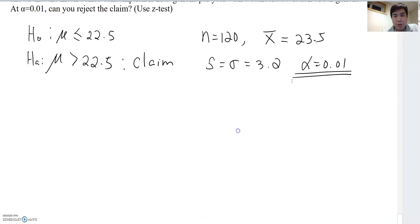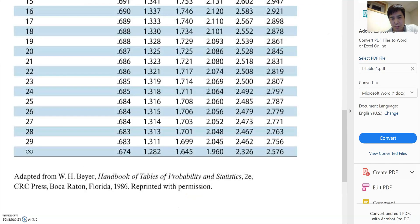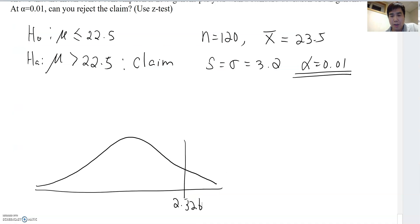Therefore, now when we draw the normal curve here, that will be 2.326 here. Okay, so let's double check it. Yes, okay. Then now, because it is a right-tail test, we keep it as a positive number.